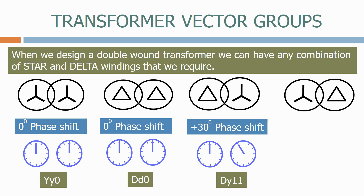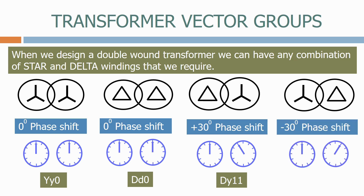Let's now look at a star-delta transformer. Again, because of the physical arrangement, a star-delta transformer also has a 30-degrees phase shift, but in the other direction. The clock faces represent this, with the secondary winding now showing 1 o'clock. It's classed as a Yd1 transformer.